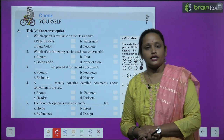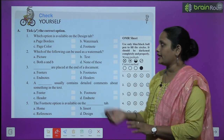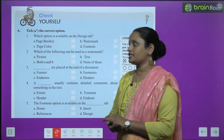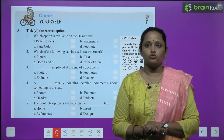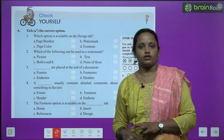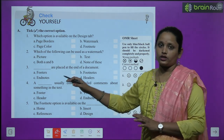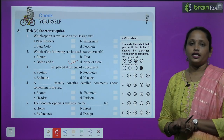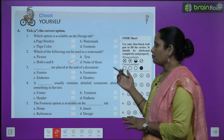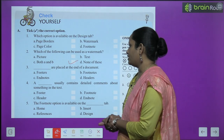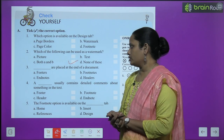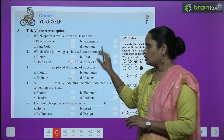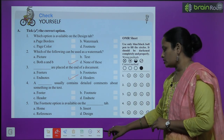Now let's move on to Check Yourself, which is the book exercise. For question 2: which of the following can be used as a watermark — picture, text, or both? Both picture and text can be inserted as a watermark, so the answer is both A and B. For the next question: what is placed at the end of the document? The answer is endnotes. The remaining questions you have to do yourself.